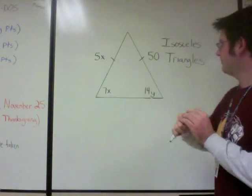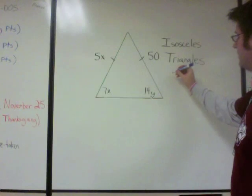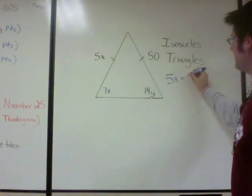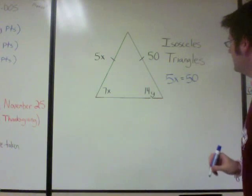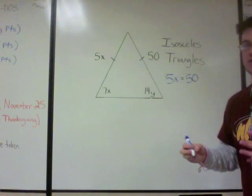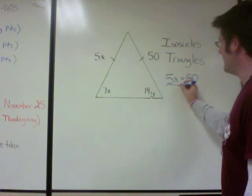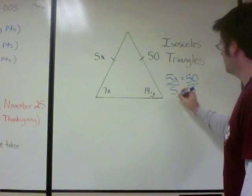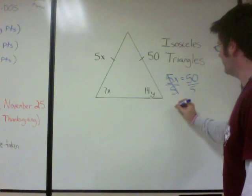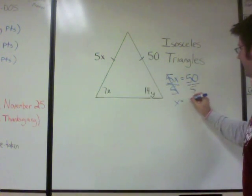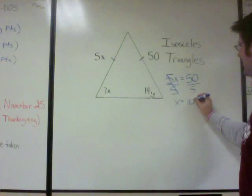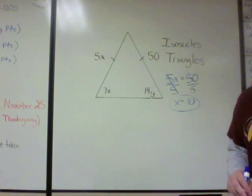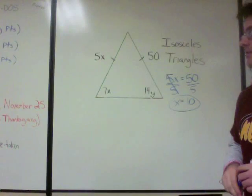So let's write that over here: 5x equals 50. We just have to do some simple algebra — divide both sides by 5. Cancel out on the left; 50 divided by 5 is 10. So x is equal to 10.